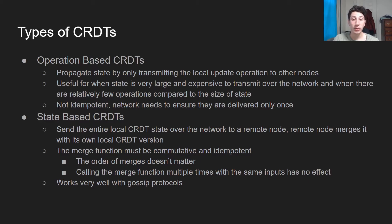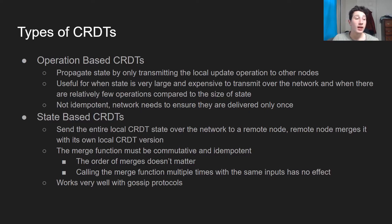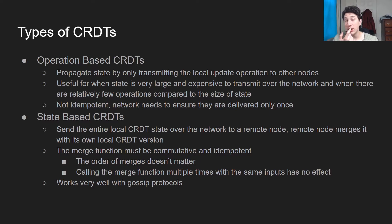These two approaches are both equivalent mathematically, so it really comes down to trade-offs. As far as state-based CRDTs go, for something like a counter, you would be sending the entirety of the counter from one node to another, and then the nodes, once they receive those remote counters, would merge in that state. The merge function must be both commutative and idempotent, so even if you accidentally duplicate a merge it has no effect, and a merge will propagate all the previous changes a node has seen. State-based CRDTs are pretty simple to reason about, but they can be slow if you have a lot to transmit over the network.